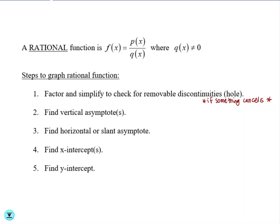Next, you want to find the vertical asymptotes, which occur when the denominator equals 0. Then you need to find the horizontal or slant asymptotes, which depend on the degree.